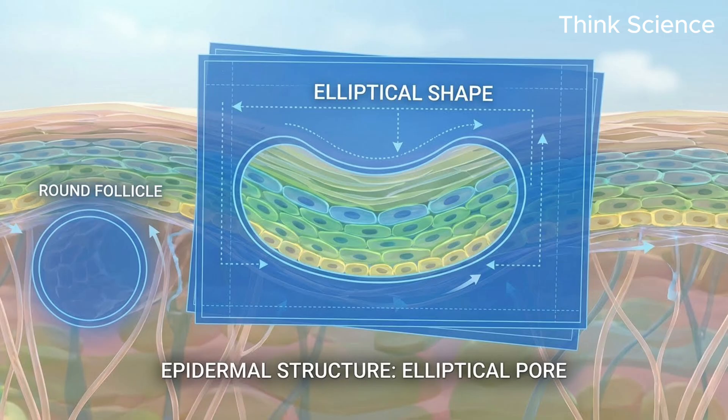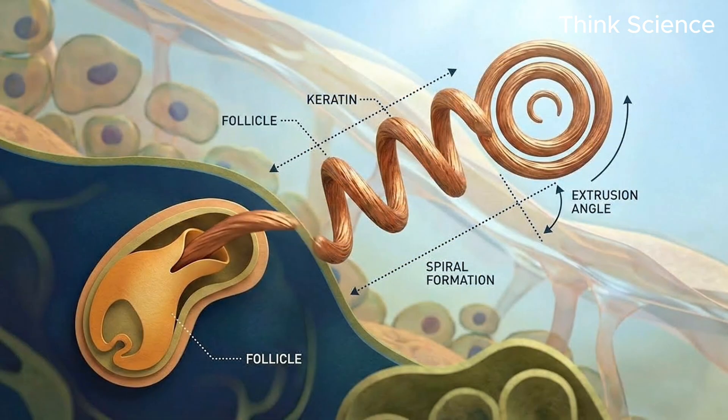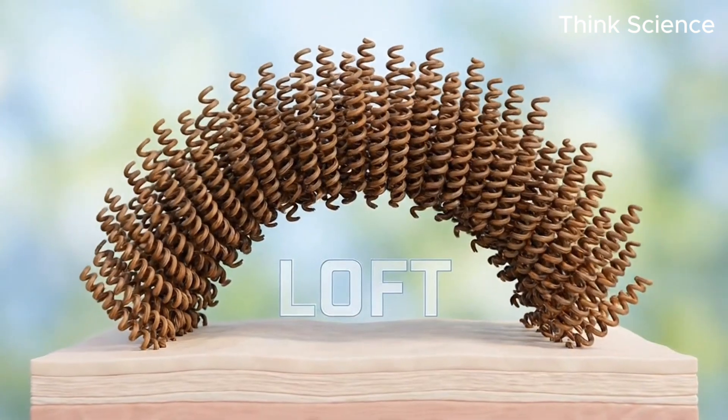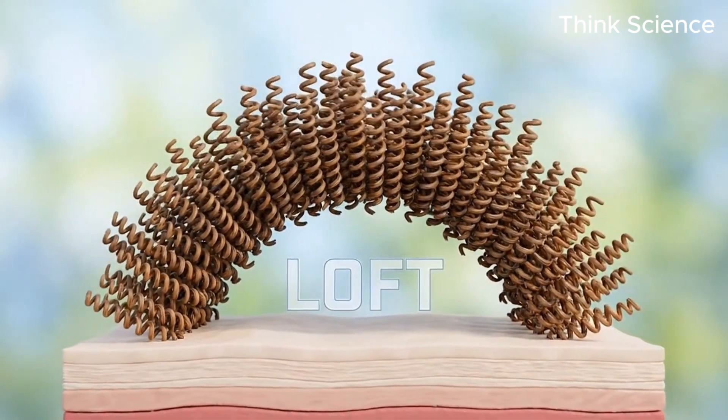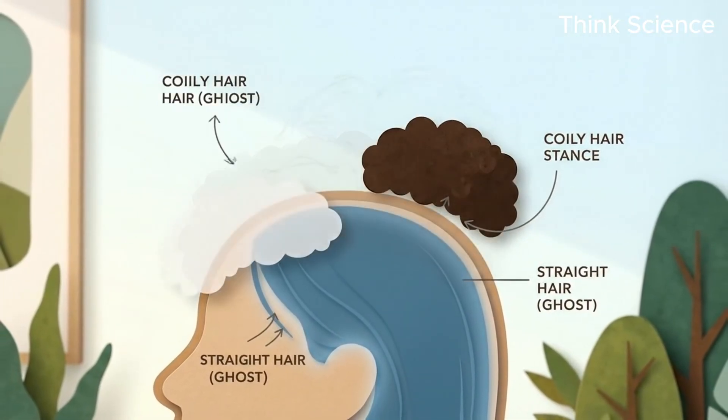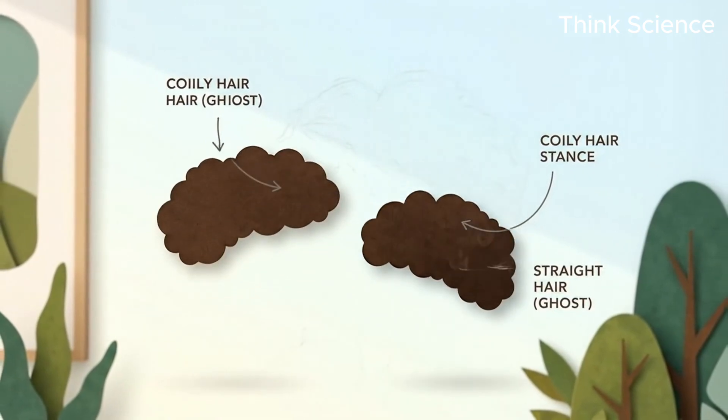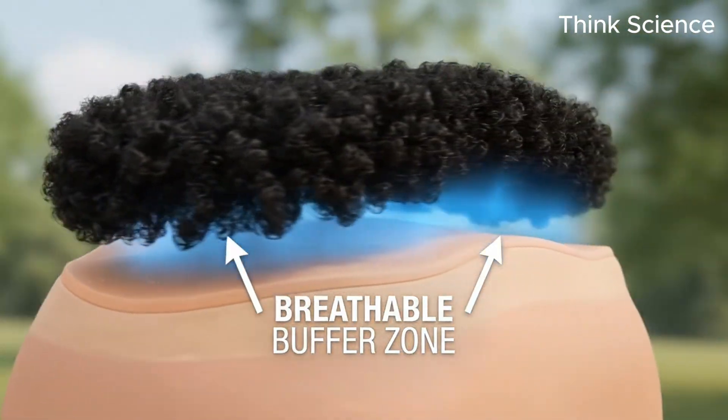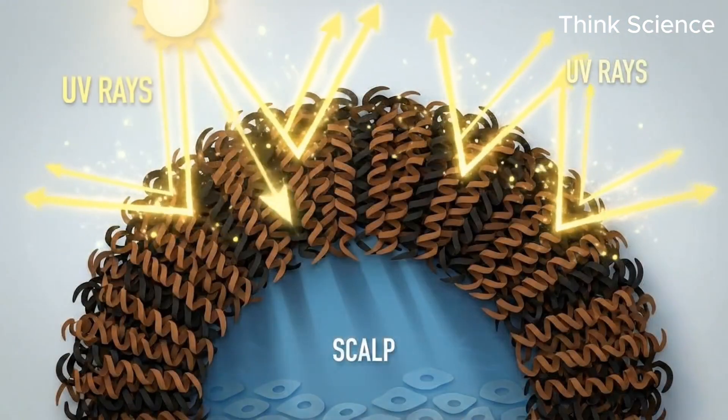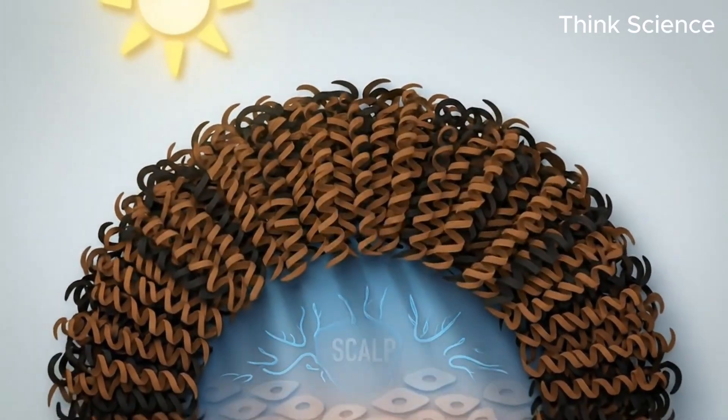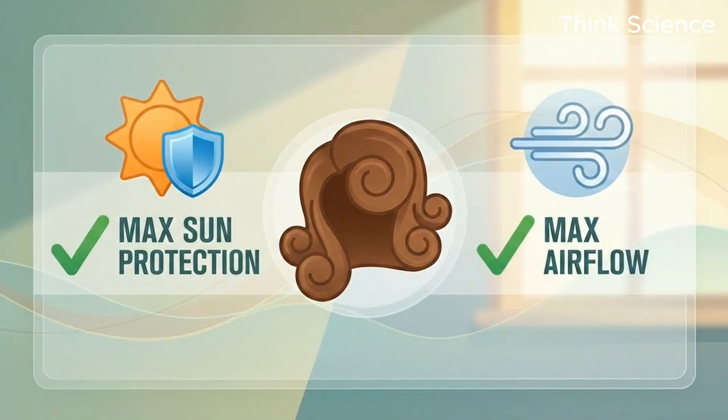Coily hair grows from an elliptical, almost kidney-bean-shaped follicle, which forces the keratin to exit at a sharp angle. As it grows, the hair twists around itself in tight, spring-like coils. This structure creates something remarkable: loft. Coily hair naturally stands up and away from the scalp rather than lying flat against it. This creates a breathable zone, a buffer of air between the top of the hair and the surface of the scalp. This air gap is critical. It allows the wind to flow through the hair to cool the scalp, while the density of the coils acts as a parasol, blocking UV rays from ever hitting the skin.